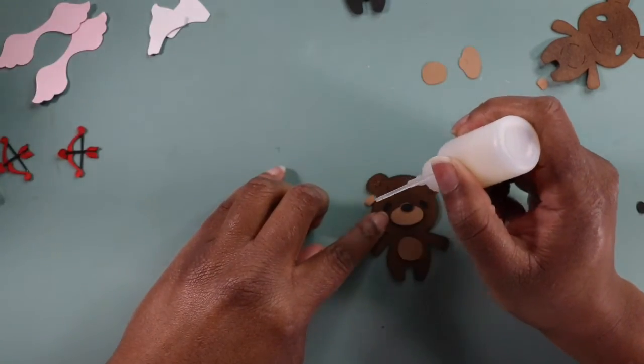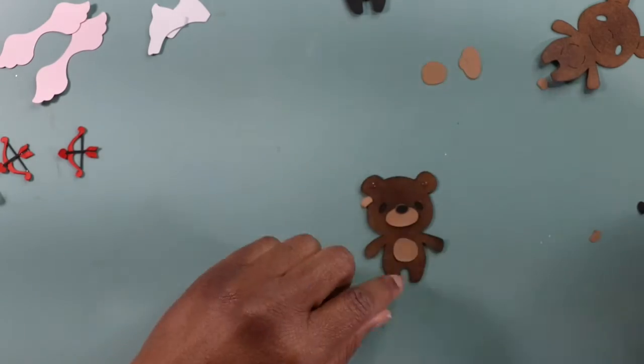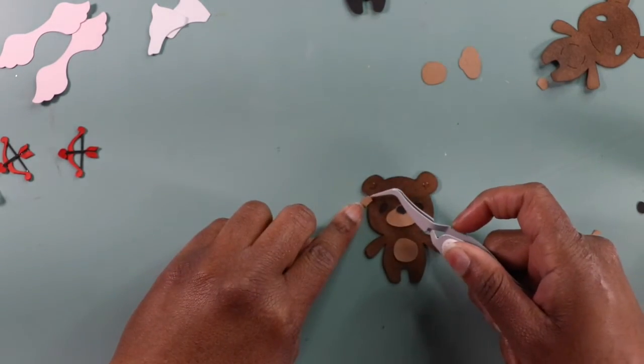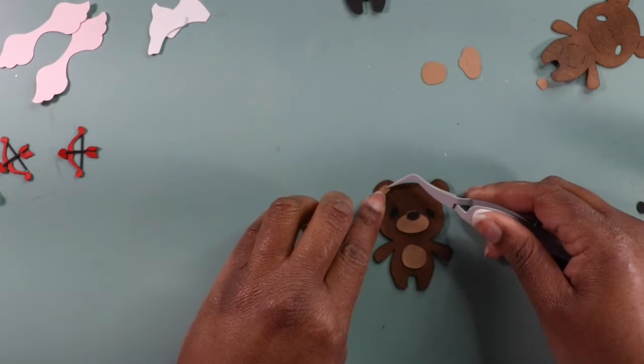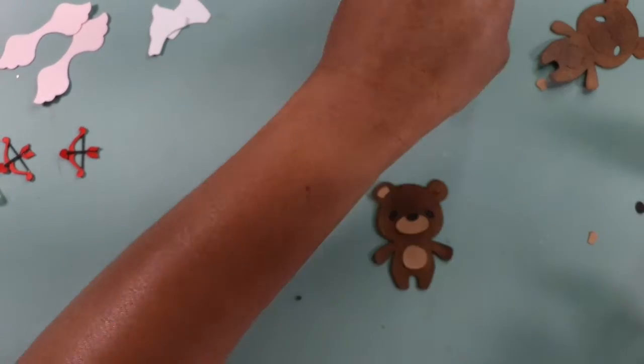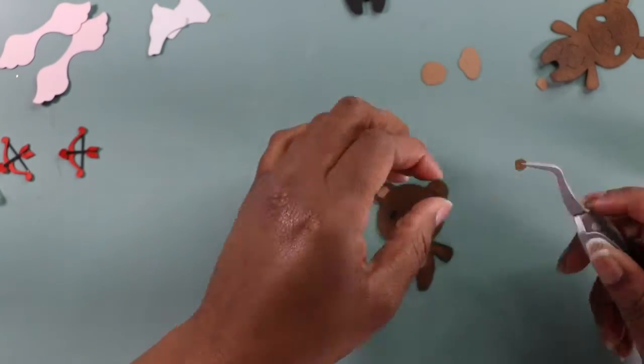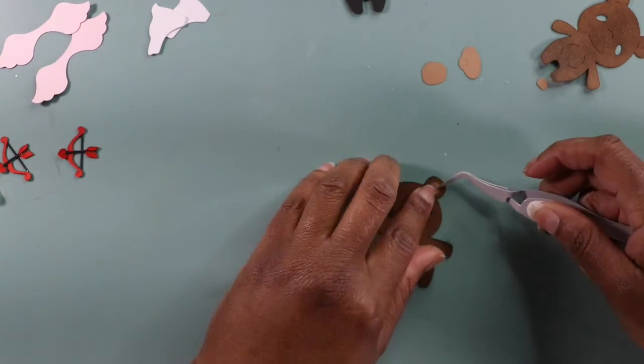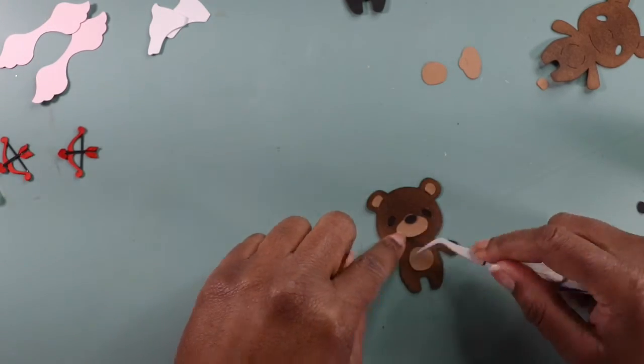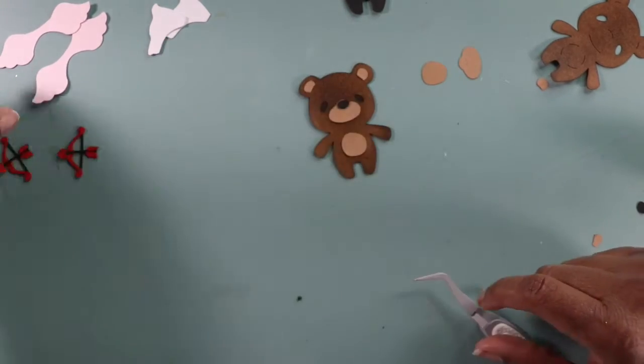And even if you wanted to you can go a step further and you know give your little guy a bow and make him a girl if you want Cupid to be a girl. I think that would be super adorable so you can even customize it a little bit more than you know what the cartridge intends to.